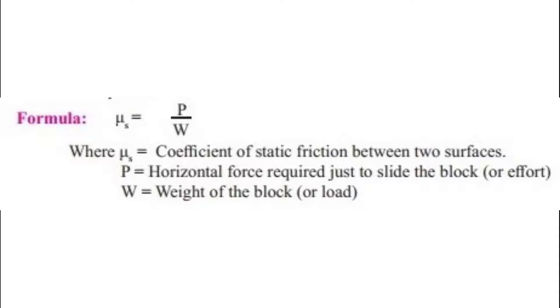In this experiment, after reading, we are going to calculate the static friction using the formula μₛ = P/W. P is the horizontal force required just to slide the block or we will call that as effort. Then W is the weight of the block or load we will add on the wooden block.